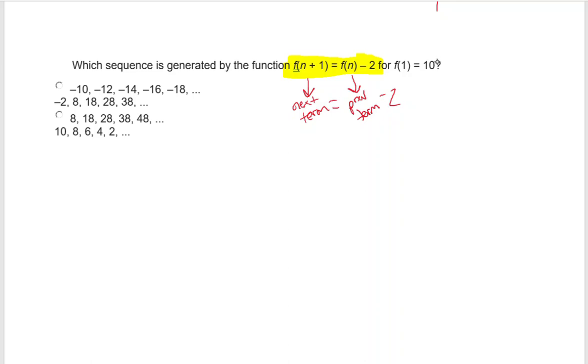So subtract 2 from the previous term. And then this is telling me the first term or the first number in the sequence is 10. Well, just knowing this, we can look over here and say, well, that doesn't start with 10, that doesn't start with 10, that doesn't start with 10. So the only answer would be this answer right here because they're saying the first term is 10.